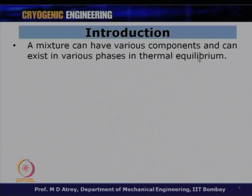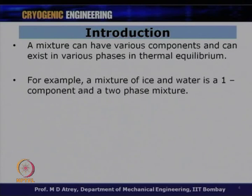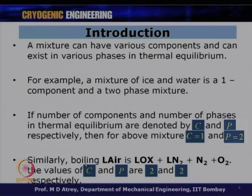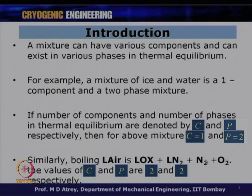A mixture can have various components and different phases which are in thermal equilibrium. For example, a mixture of ice and water is a one-component two-phase mixture - solid and liquid in thermal equilibrium. If number of components and phases in thermal equilibrium are denoted by C and P respectively, then for this mixture C=1 and P=2. For boiling liquid air, we have LOX, liquid nitrogen, nitrogen gas and oxygen gas - two components in two phases, so C=2 and P=2.